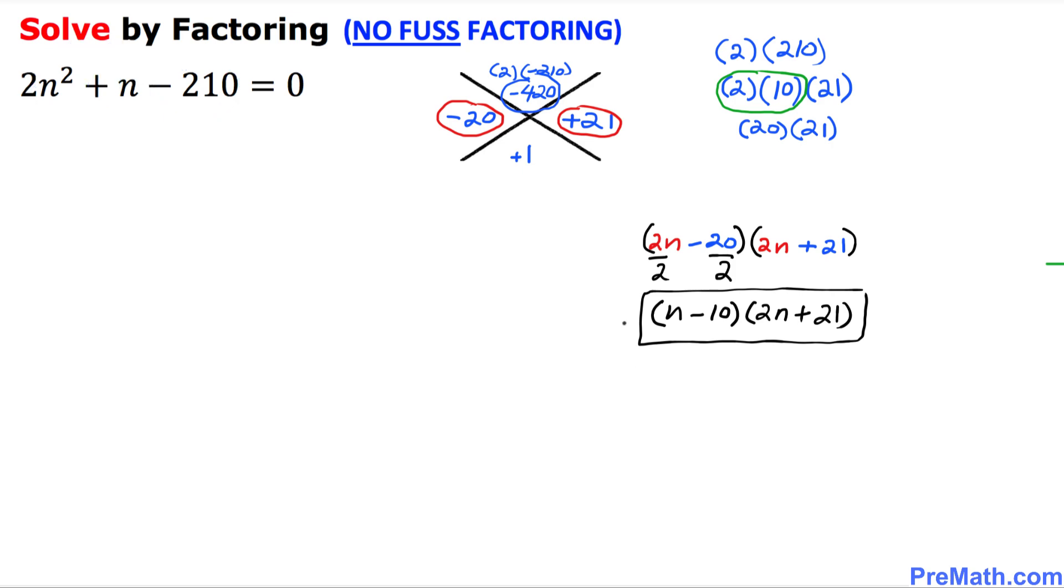And now in the next step, we are going to write down n minus 10 times 2n plus 21. Set it equal to 0. We already have a 0 over here.